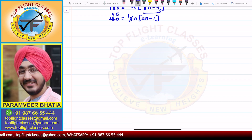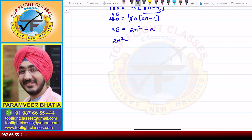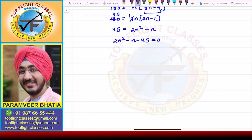From here, 45 = 2N squared minus N. So, 2N squared minus N minus 45 = 0.